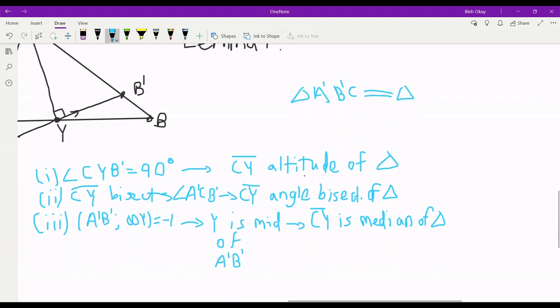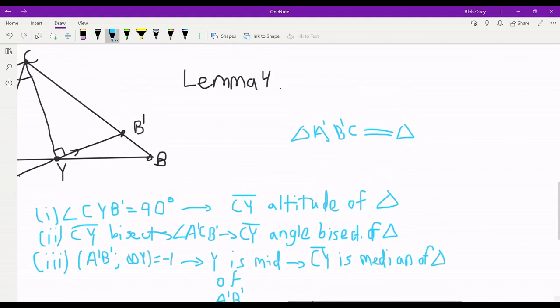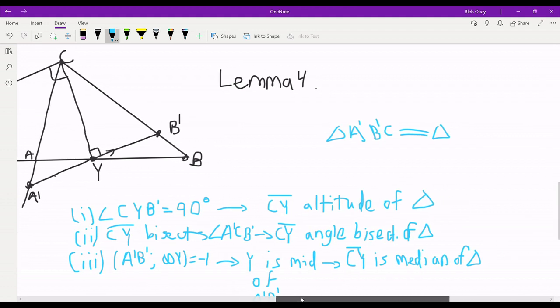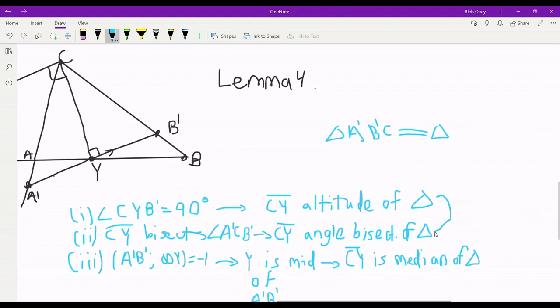And these lines coincide when we have isosceles triangles. So we know that in particular, if two of these conditions are true, so if CY is both an altitude and an angle bisector, that means that our triangle is isosceles and we would have that CY is also a median. Because in an isosceles triangle, these special lines—the angle bisectors, altitudes, and medians—they coincide. And all we need is that two of them are equal for the third one to also be equal.